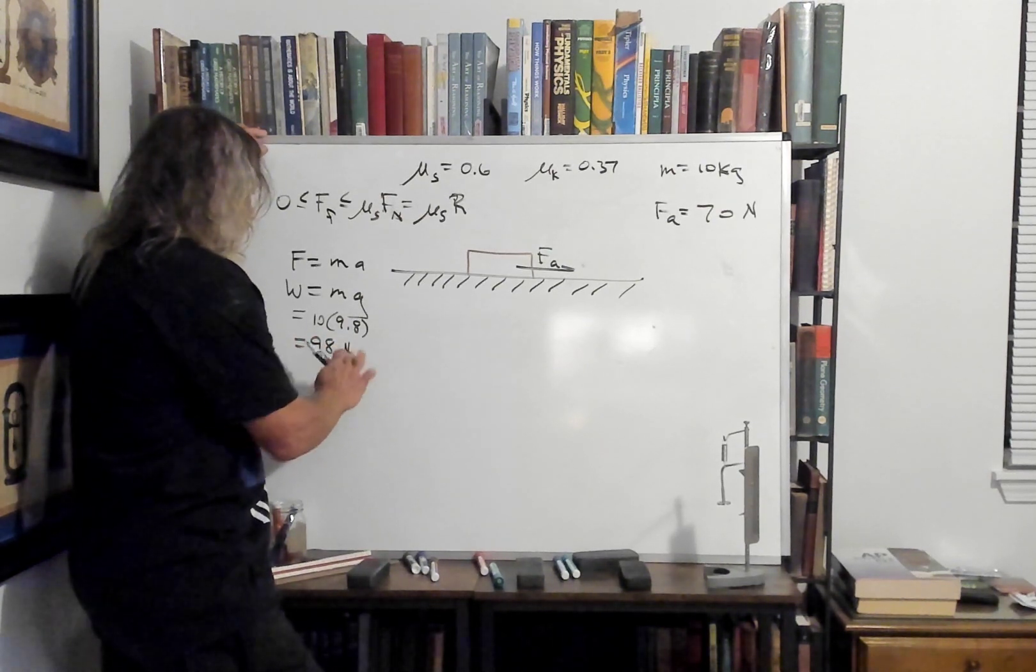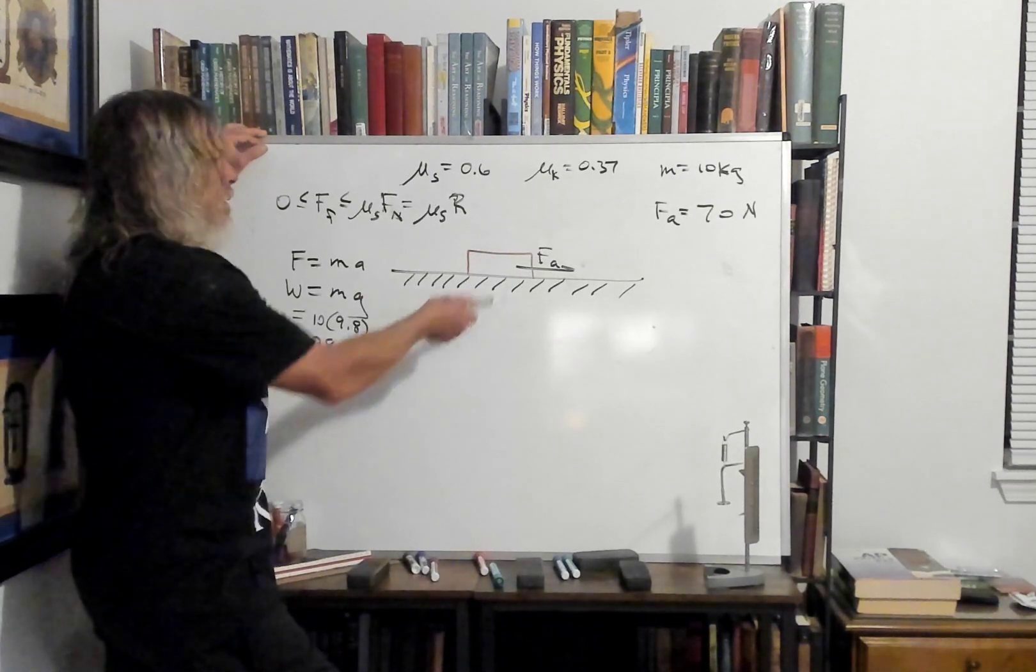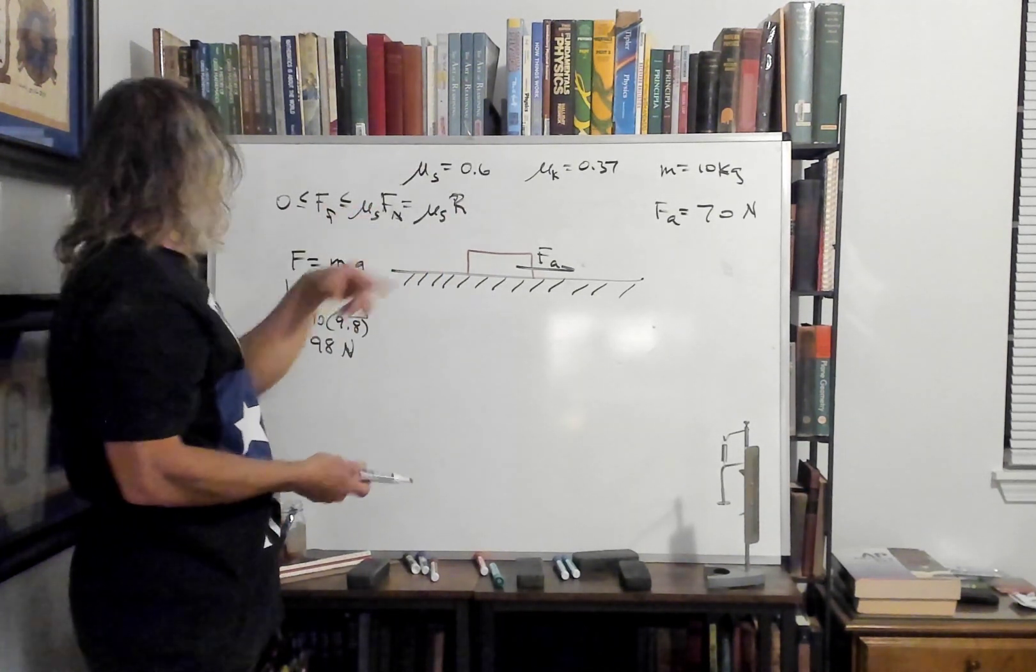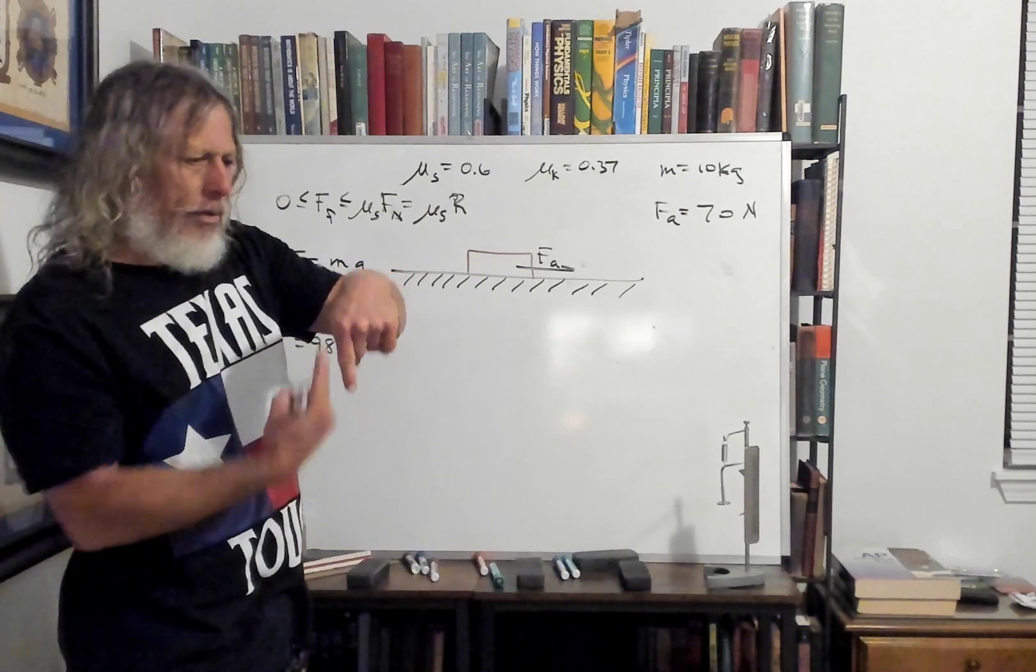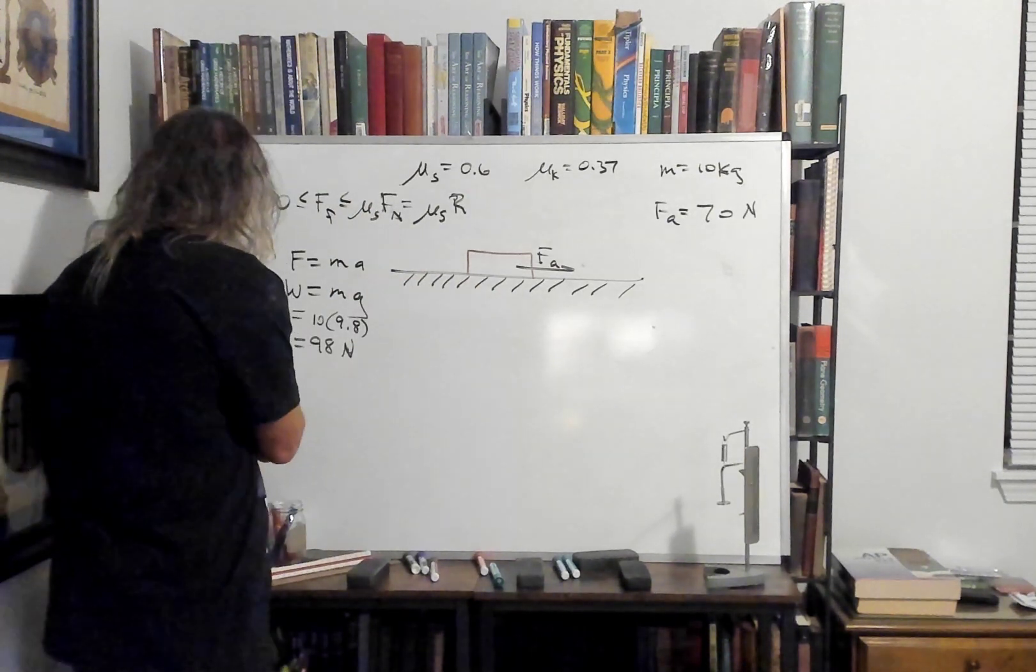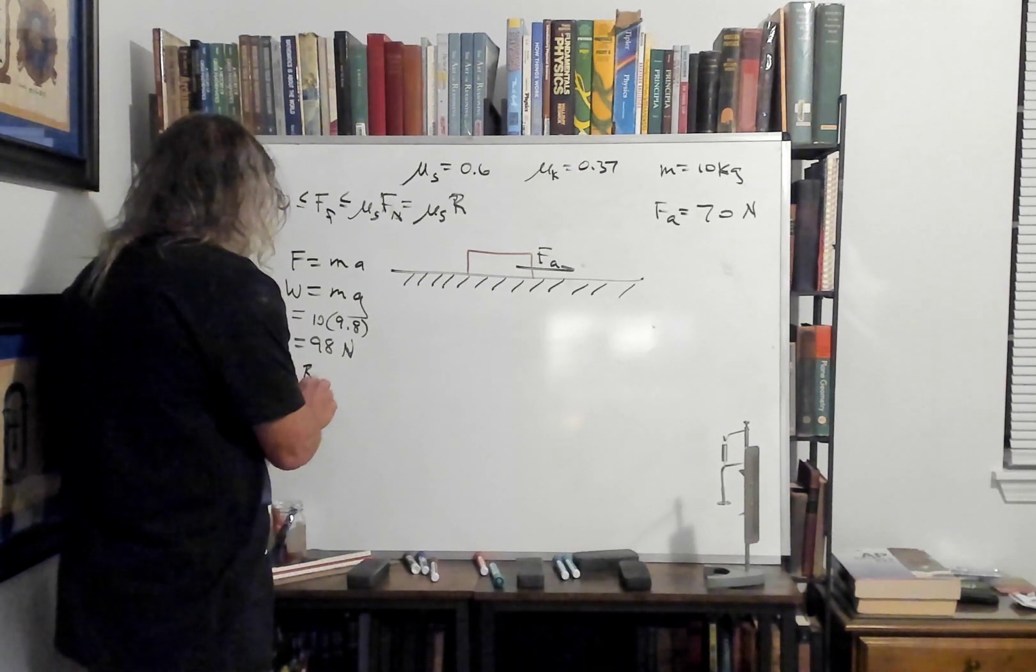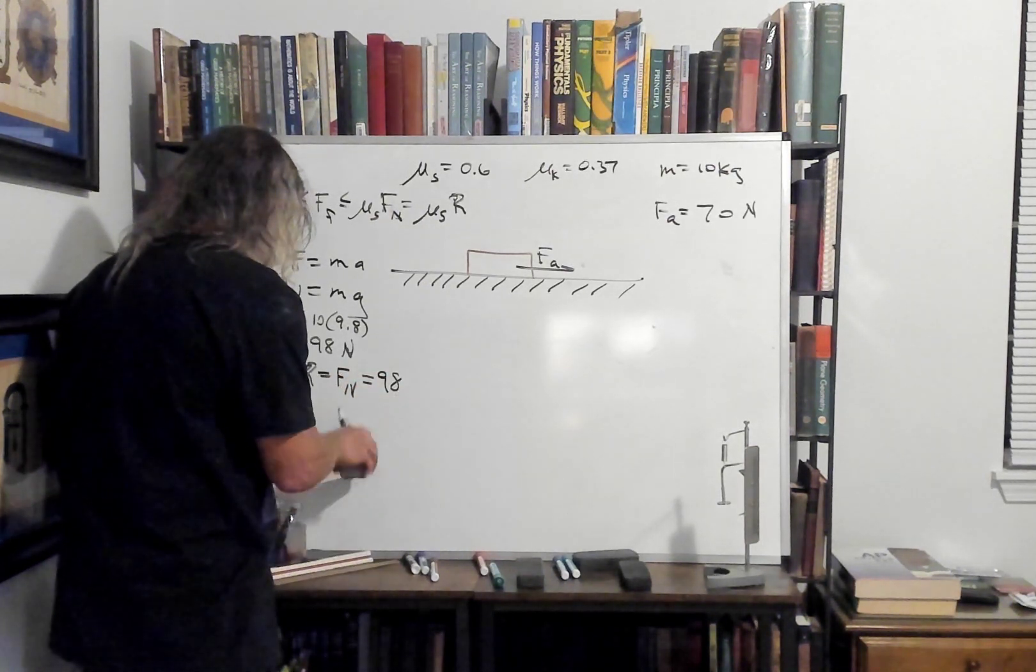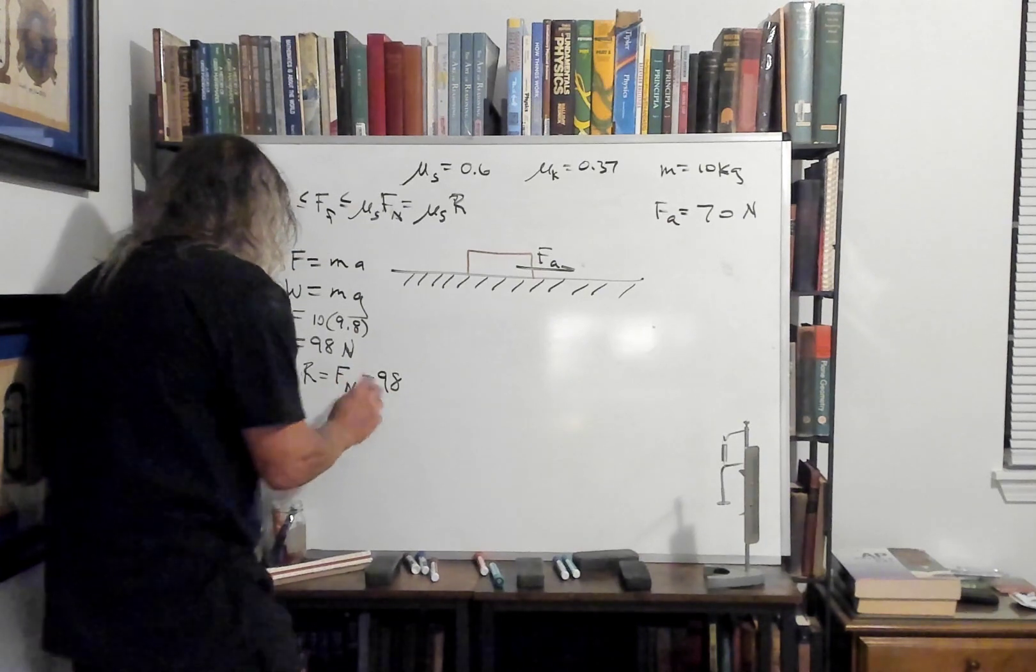And then we got the weight is 10 times 9.8, so 98 newtons, about 22 pounds. So the weight down is 98 pounds. And that'd be like the R, F_sub_n, or R, because that's the weight. And remember, the weight's pulling down, and the normal force is pushing up to zero out. So the weight is the same as the normal force. So by Newton's laws, this implies that R or F_sub_n is 98.